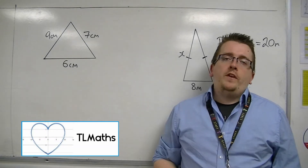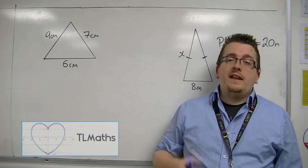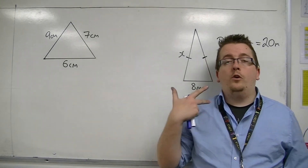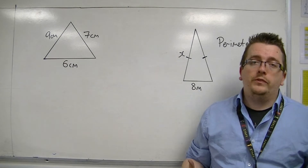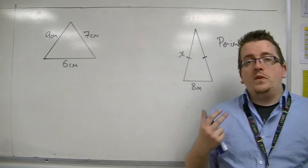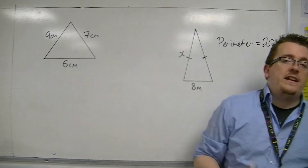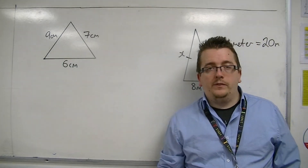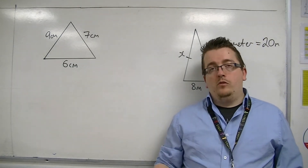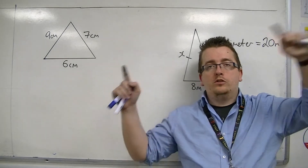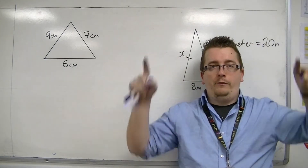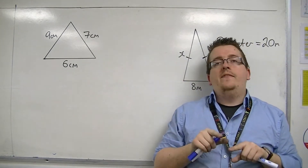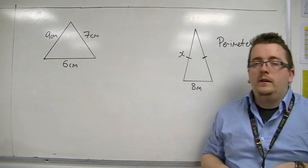In this video I'm going to be looking at primarily the perimeter of triangles. I just want to get it clear as to what perimeter means. Perimeter is looking around the outside of a shape and the length that that would be.